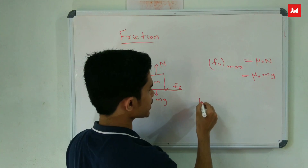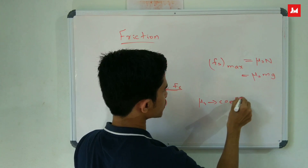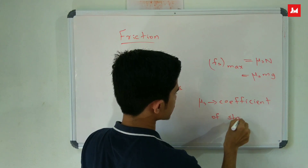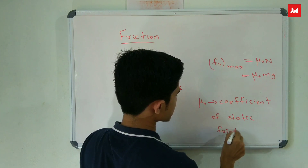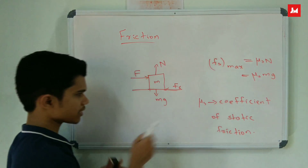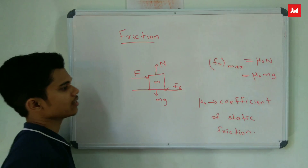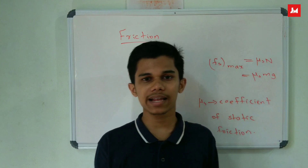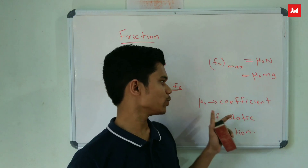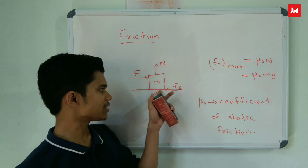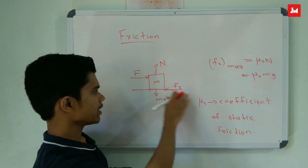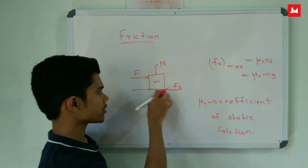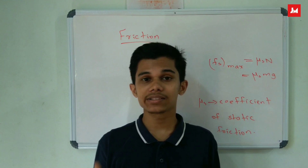Mu S is the coefficient of static friction. This μs only depends on the surface — μs depends on the nature and depth of the surface.